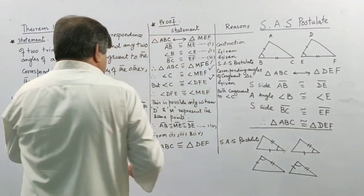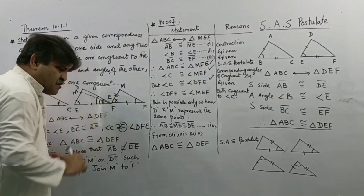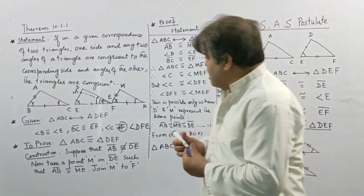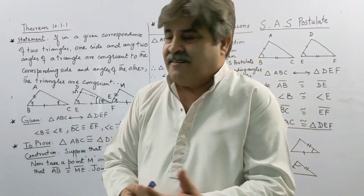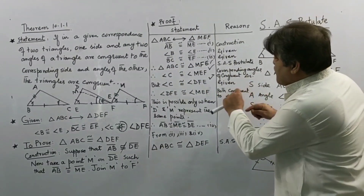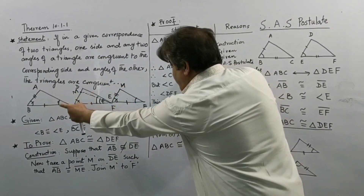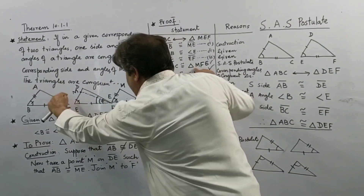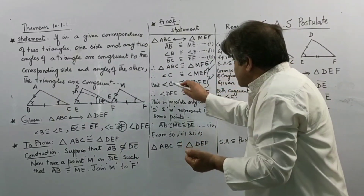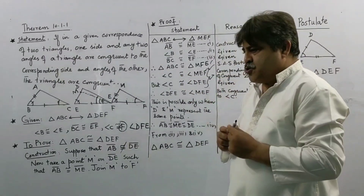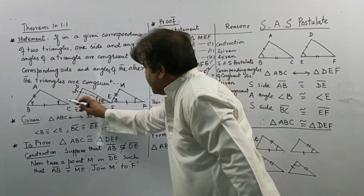Now if I ask you: can this angle be congruent to this, and can this angle be congruent to angle C? You will say that is a nonsense idea — this angle is smaller and this angle is larger, so these two angles cannot both be equal to angle C. According to our mathematics, angle C is congruent to angle MFE, and angle C is congruent to angle DFE — which is impossible. Angle C cannot be congruent to two different angles.